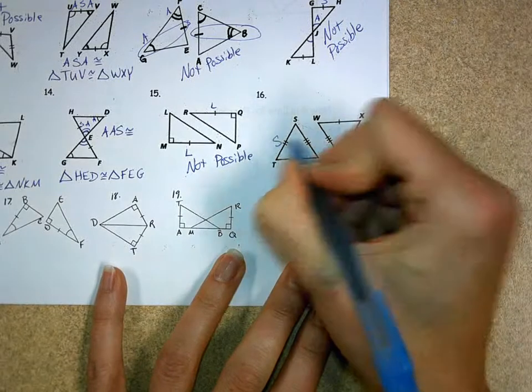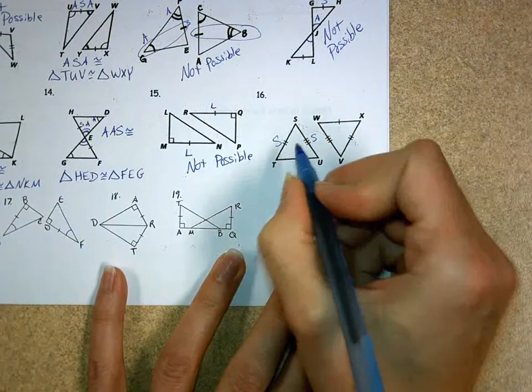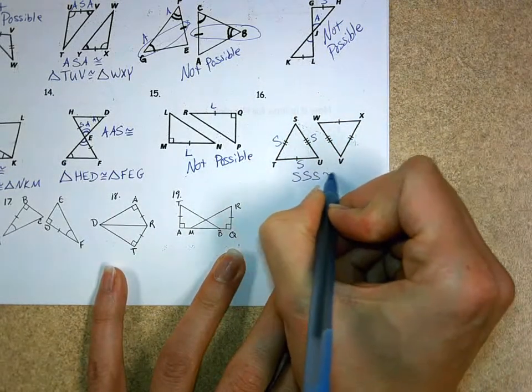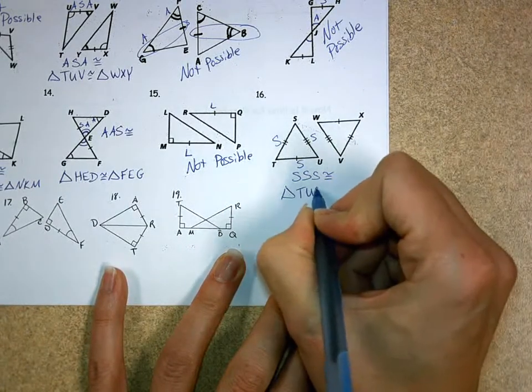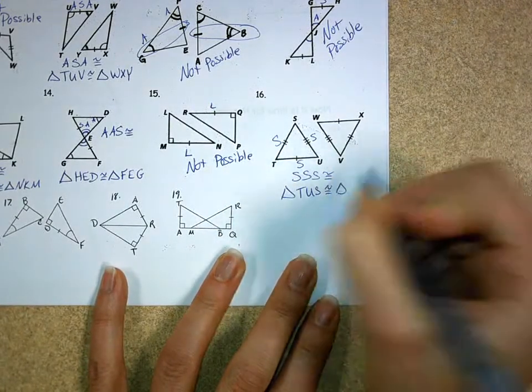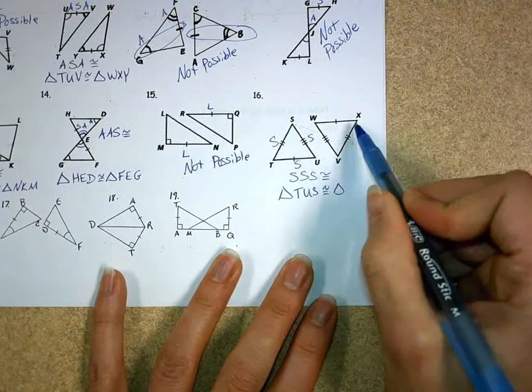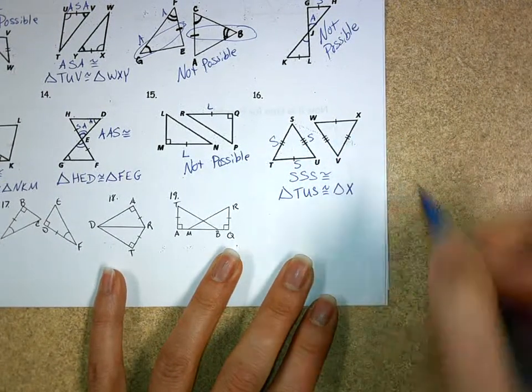Look at 16. Oh, yeah. Three pairs of sides. So, I have the side, side, side congruence. So, you can go triangle. Let's go TUS. It's congruent. Now, I use the fact that T is opposite the three side, X is opposite the three side.